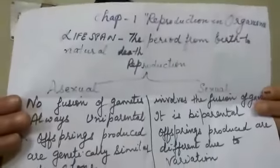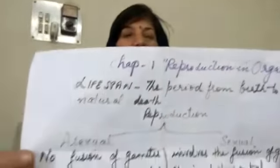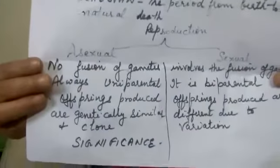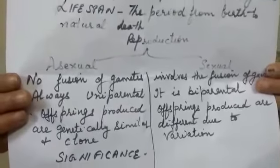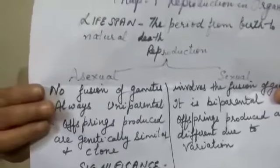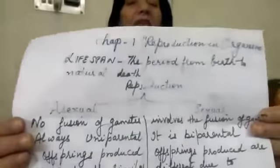Reproduction is mainly of two types: one is asexual reproduction and another is sexual reproduction. We should know the difference between asexual reproduction and sexual reproduction. Asexual reproduction means without involving sex cells or gametes — it does not involve the fusion of gametes.